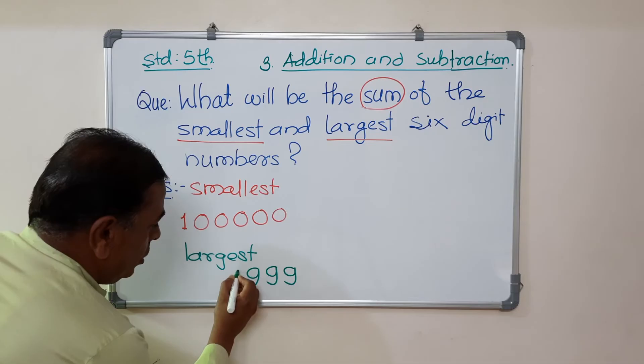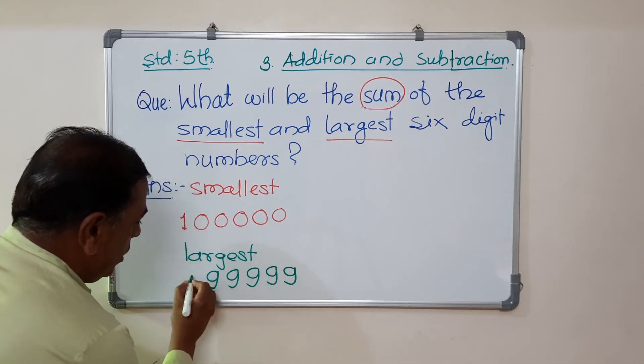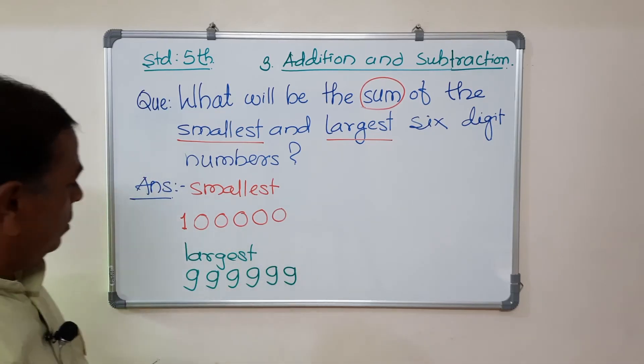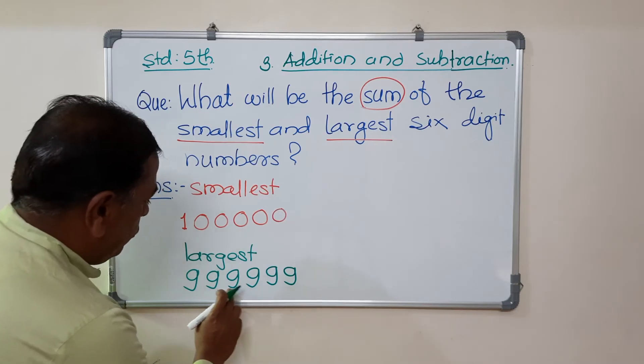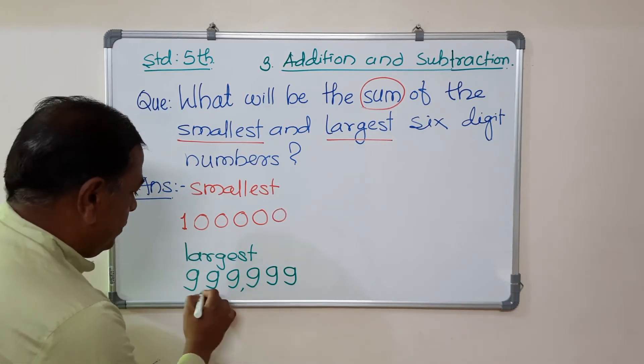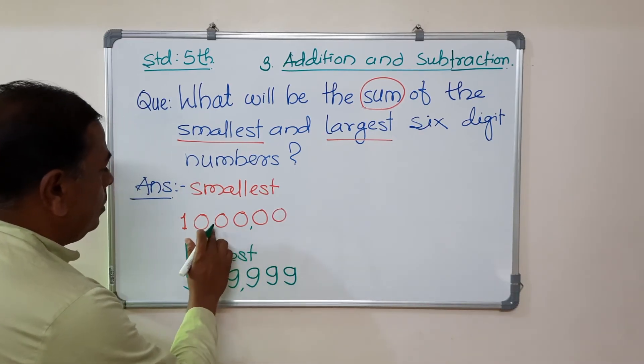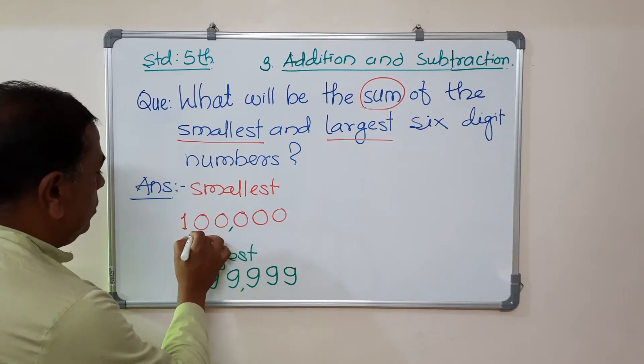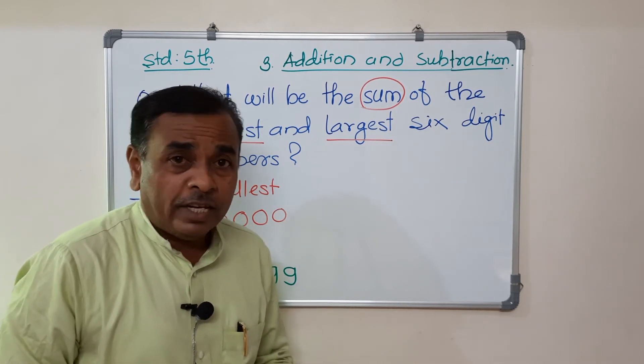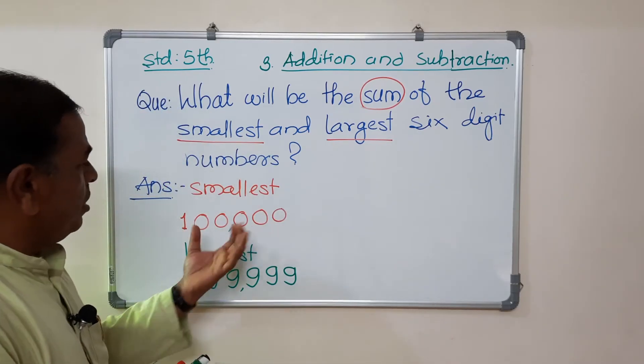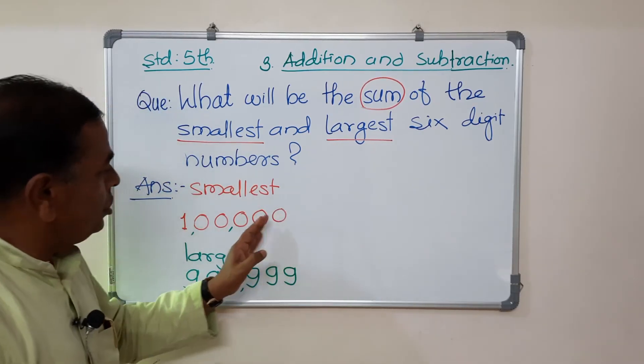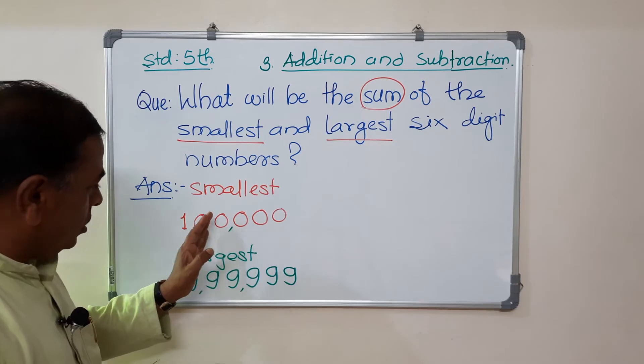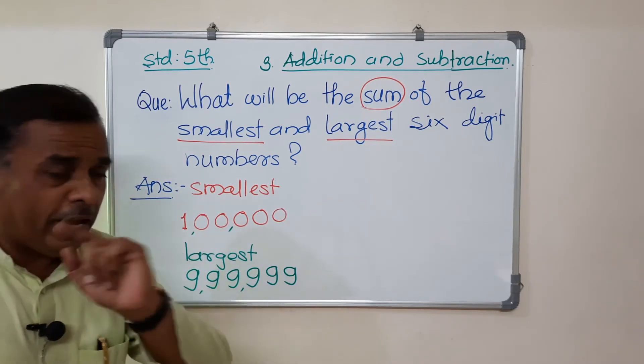2, 3, 4, 5, 6. 1, 2, 3, 4, 5, 6. First number is 1 lakh. Unit, 10, 100, 1000, 10,000, lakh. 1 lakh.